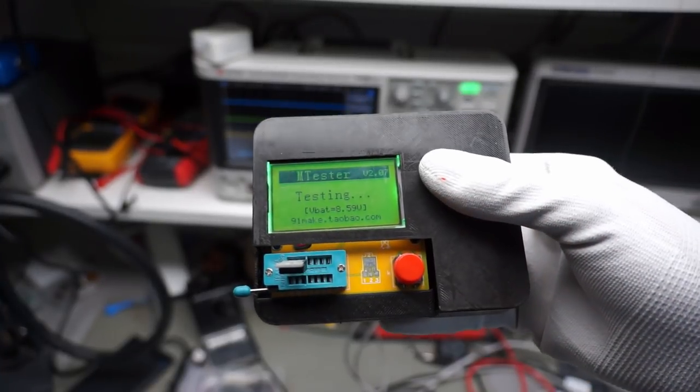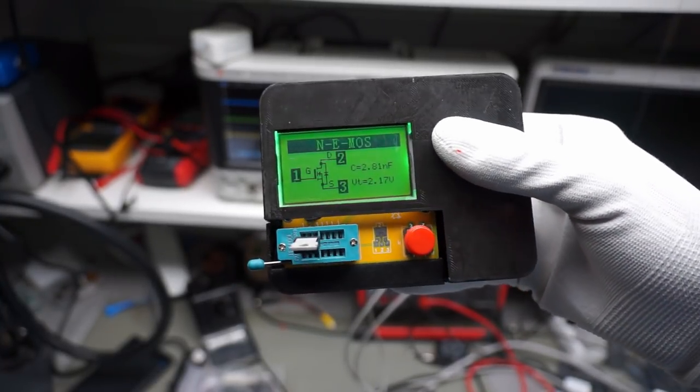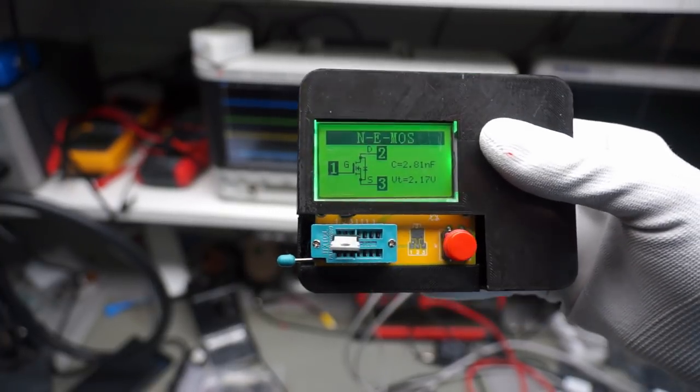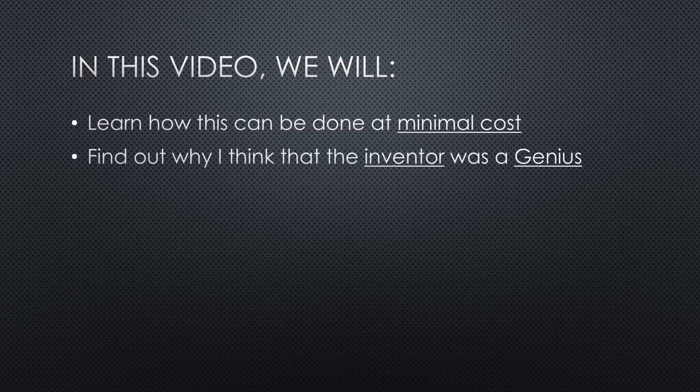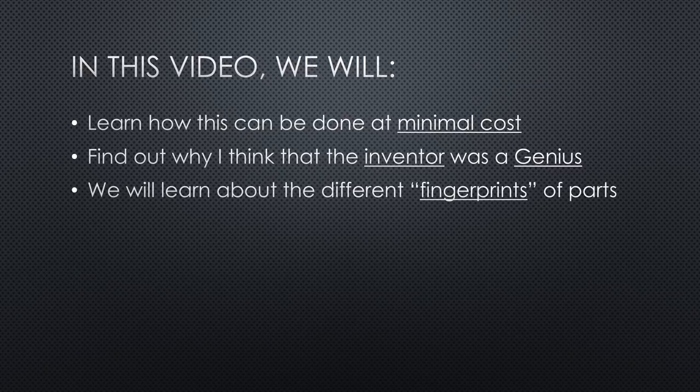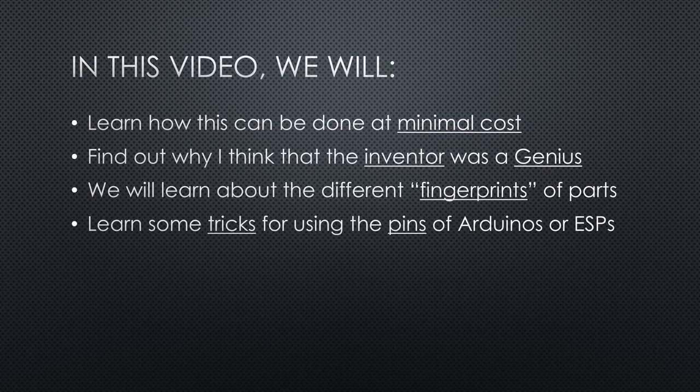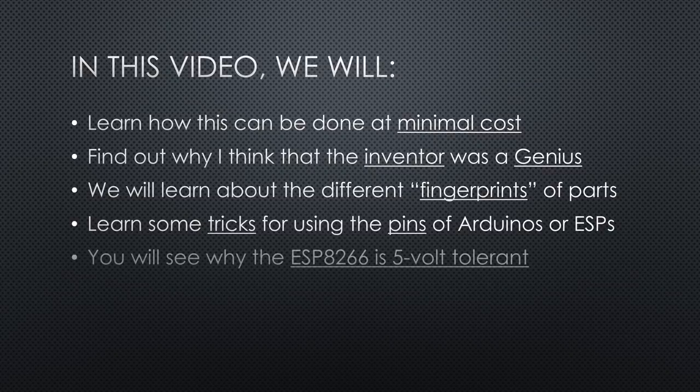Component testers, sometimes also called transistor testers, can deal with most of our parts like resistors, transistors, capacitors and so on. In this video, we will learn how this can be done at minimal cost, find out why I think the inventor was a genius, and learn about the different fingerprints of parts like NPN or PNP transistors. You will also learn some tricks on how to use the pins of your Arduino or ESPs. You will see why the ESP8266 is 5V tolerant.